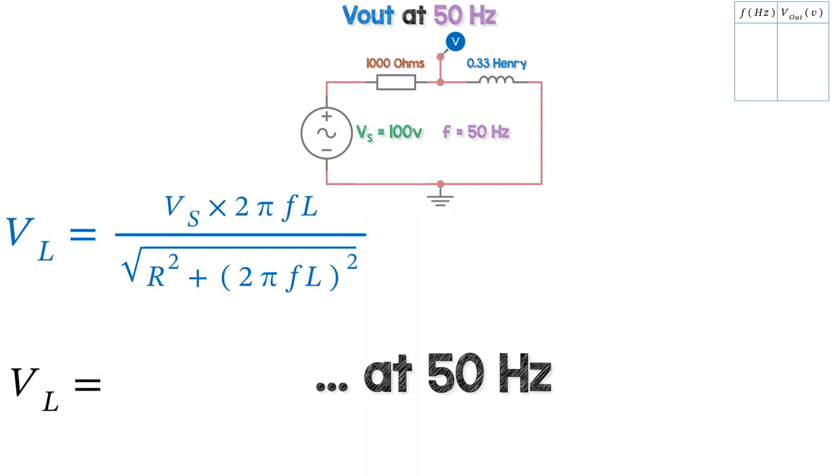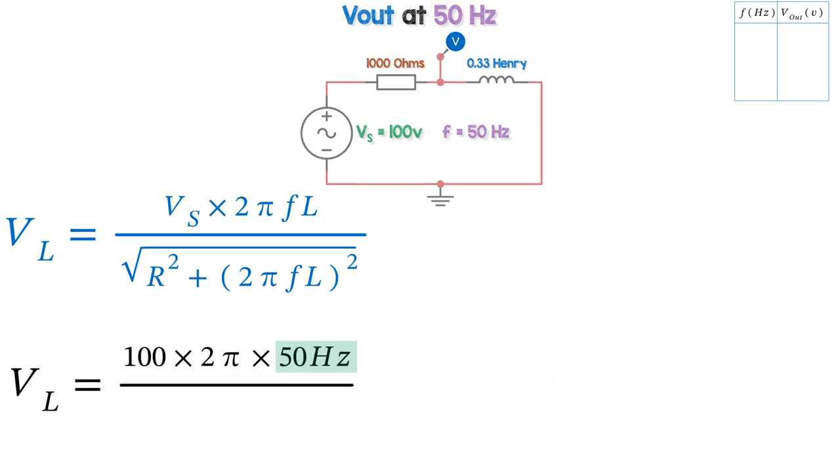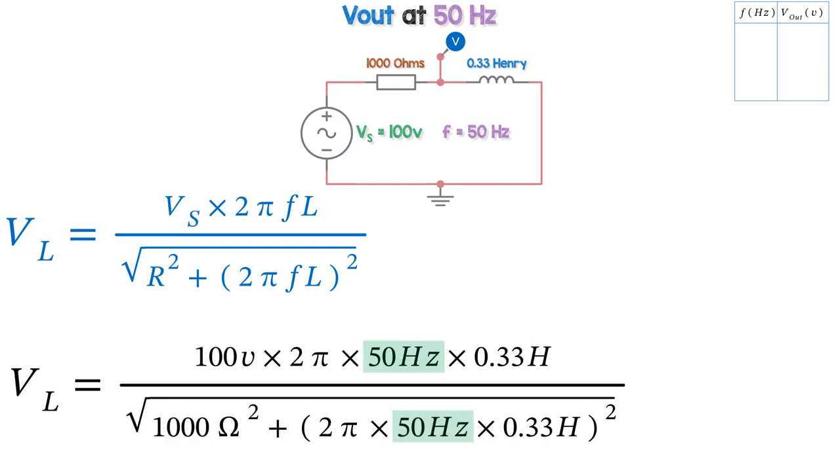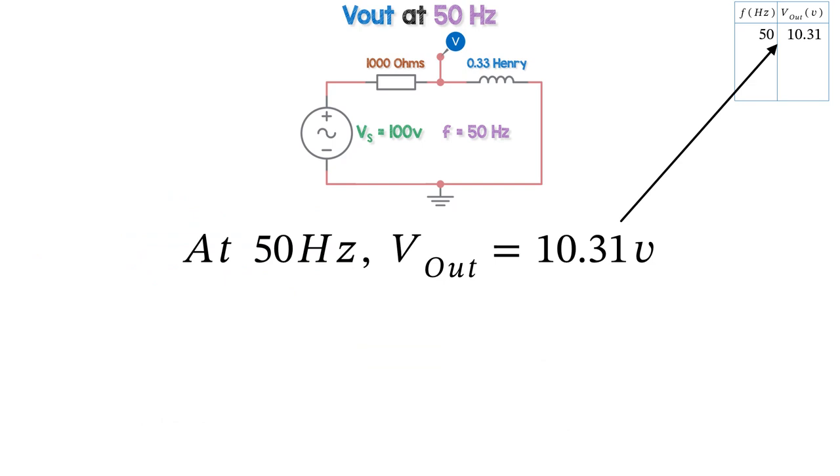At 50Hz, Vl is equal to 100V supply voltage times 2π times 50Hz times 0.33 Henry for the inductor, divided by the square root of 1000 ohms squared plus 2π FL squared, where the frequency is 50Hz. So at 50Hz, Vout is 10.31 volts.